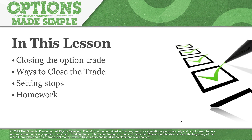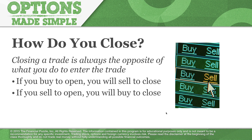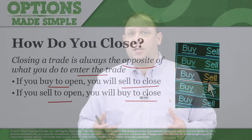Let's start talking about closing the trade. When we're looking at option trades, closing the trade is really as simple as taking the opposite of whatever we did to get into the trade. The opposite of whatever you did to enter the trade — if you buy to open, you will sell to close. And if you sell to open, you're going to buy to close.